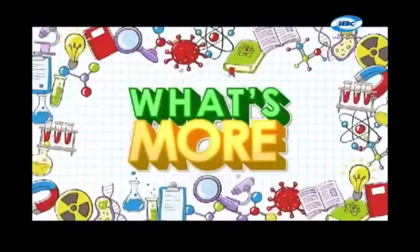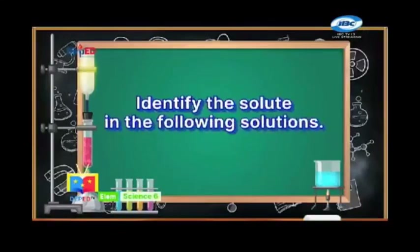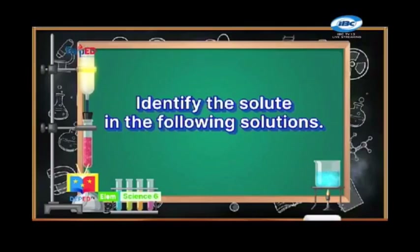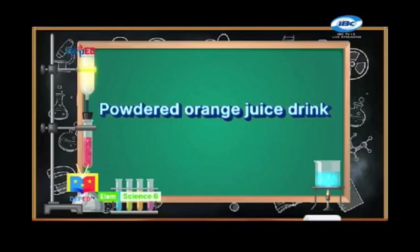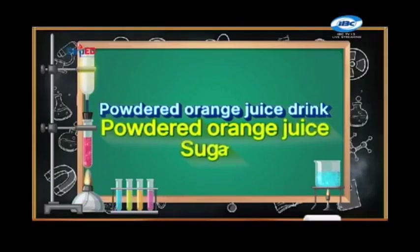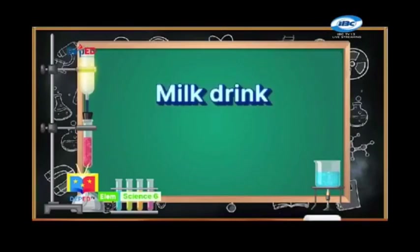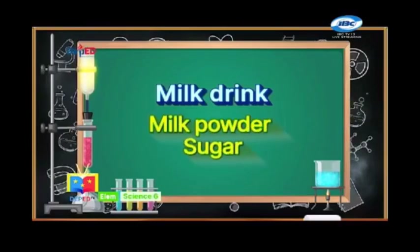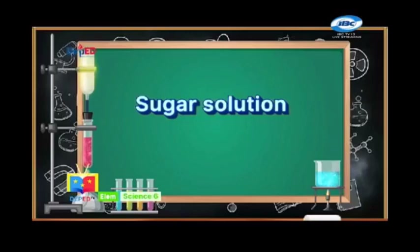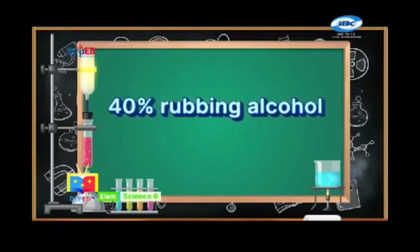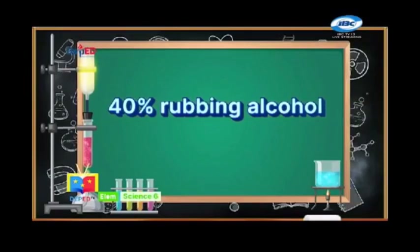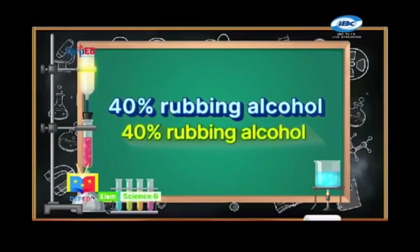Science-minded learners, let's have What's More! Identify the solute or solutes in the following solutions and do it on your paper. The correct answer for the first is powdered orange juice and sugar. The correct answer for the second is milk powder and sugar. The correct answer for the third is sugar. For 40% rubbing alcohol, the correct answer is 40% rubbing alcohol.